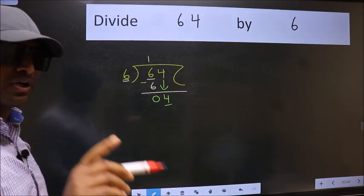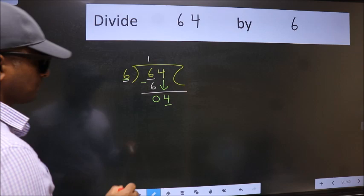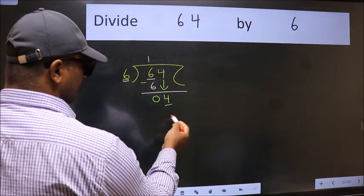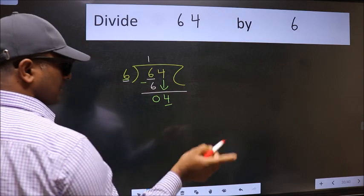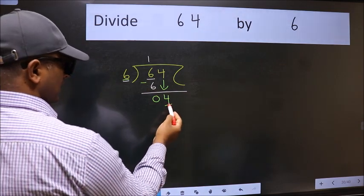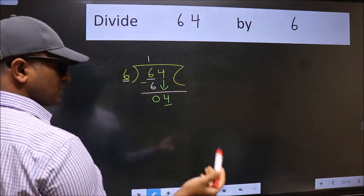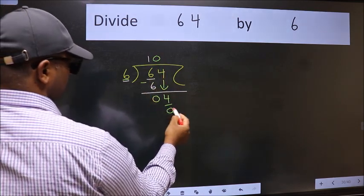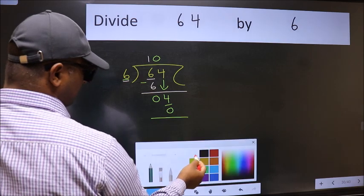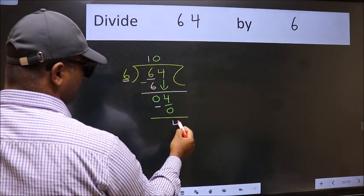Instead of that, what you should think of doing is: which number should we take here? If I take 1, we will get 6. But 6 is larger than 4. So what we do is we take 0. So 6 into 0 is 0. Now we subtract. We get 4.